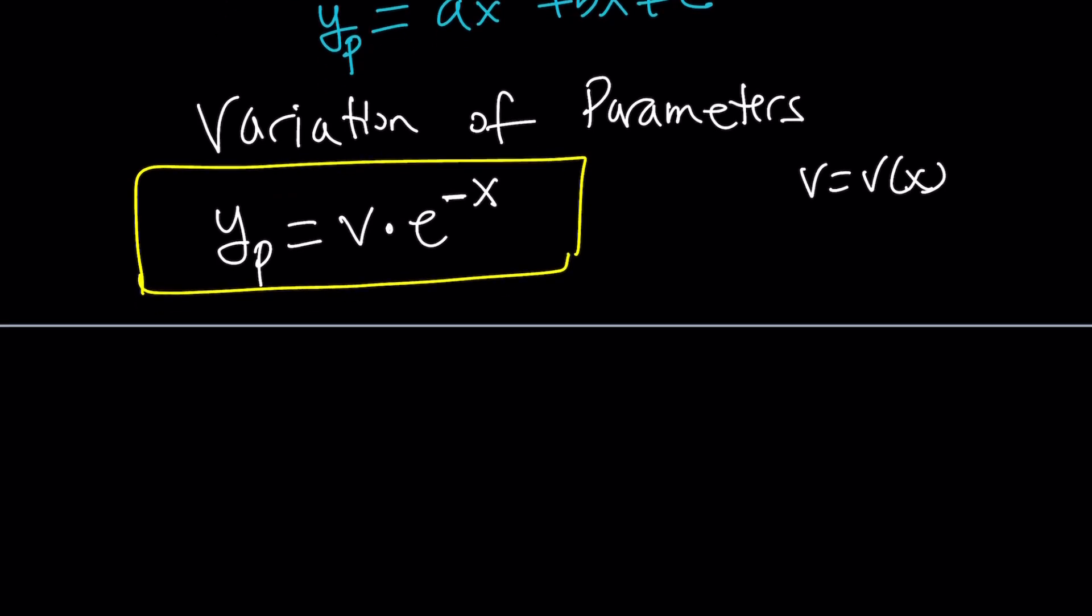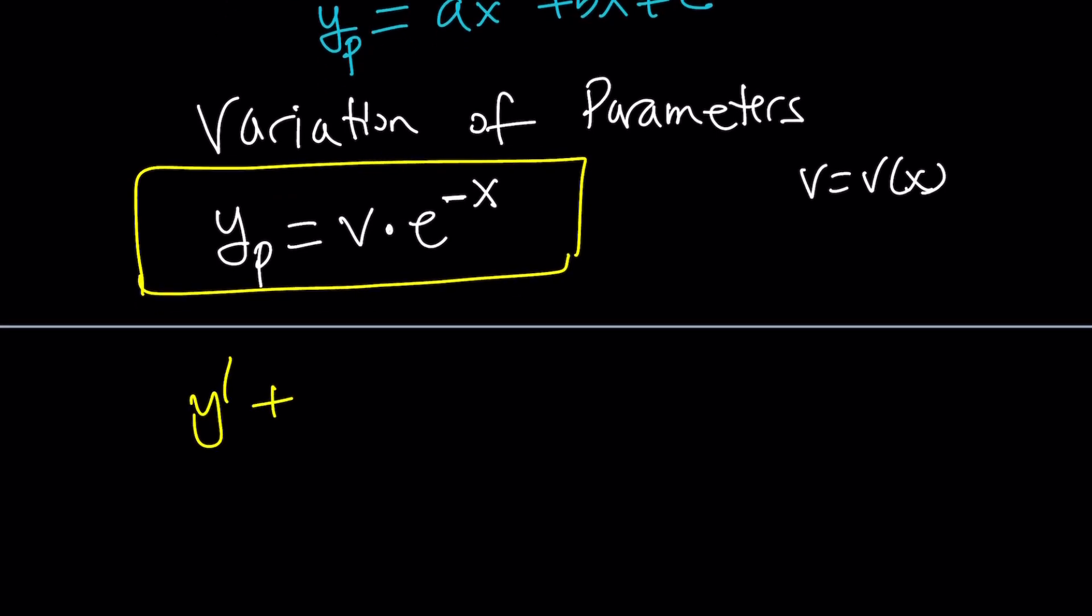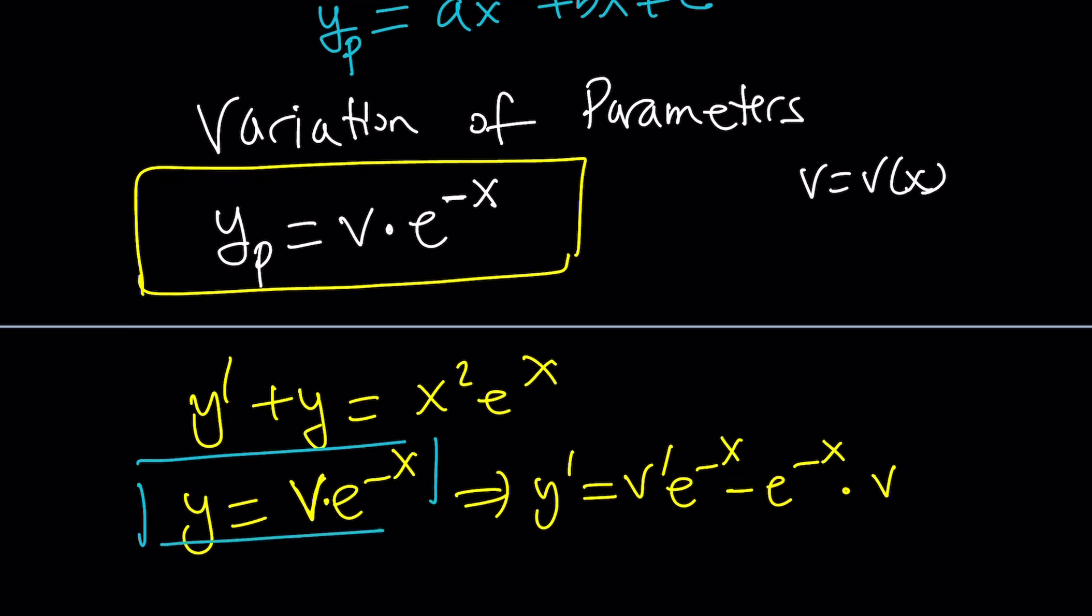We can go ahead and plug it in. I have y' + y = x²eˣ. If y = ve⁻ˣ, what is y' going to be? Think about it. v is a function, not a constant, so you have to think about the product rule: the derivative of the first function times the second, plus the derivative of the second, which is -e⁻ˣ, times the first function. This is y, this is y'. And we're going to go ahead and plug those in here in a different order, of course. Let's do it.